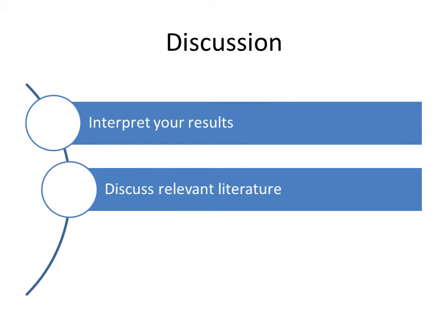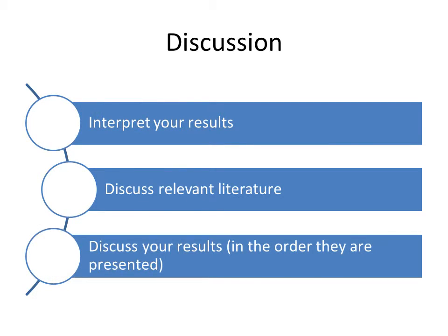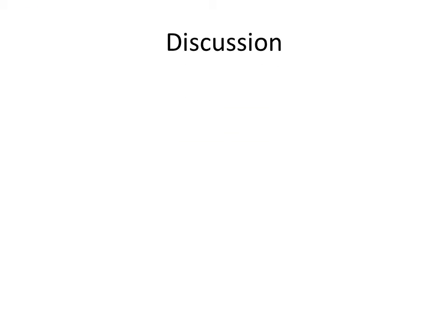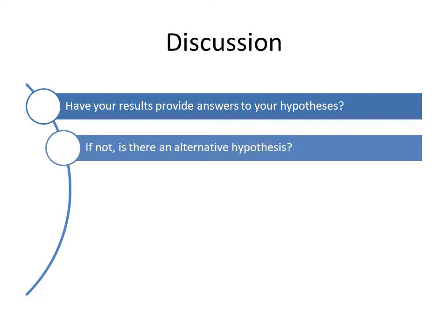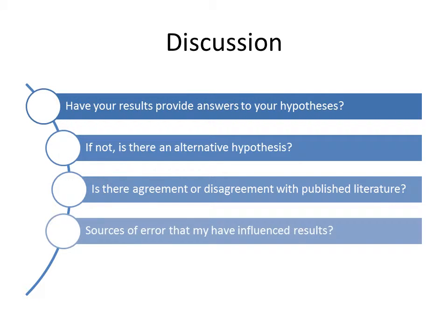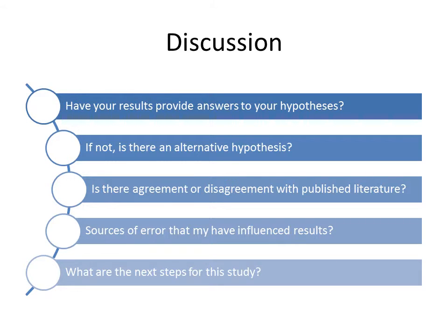The purpose of a discussion section is to interpret the results relating them to previous studies that the author or other authors have done. The author should begin the discussion section by restating the tested hypothesis, then begin interpreting the results in the light of the hypothesis. Remember to always discuss your results in the order that they were presented. Some ideas to discuss include: have your results provided an answer to your hypothesis? If not, is there an alternative hypothesis? Is there agreement or disagreement with the published literature? Are there any sources of error that may have influenced your results? Or what are the next steps for this study?